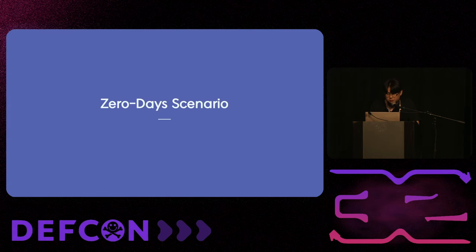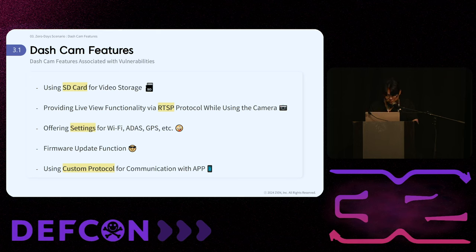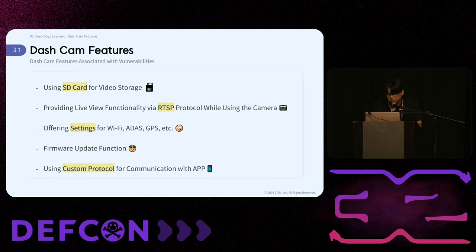Now, we will discuss zero-day scenarios. Dashcams have the following features: they use SD cards for video storage and employ the RTSP protocol for live view functionality. They offer settings for Wi-Fi, ADAS, GPS, firmware updates, and communication via custom protocols. Let's explore which vulnerabilities are associated with these features.